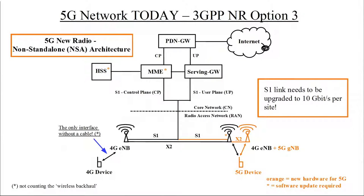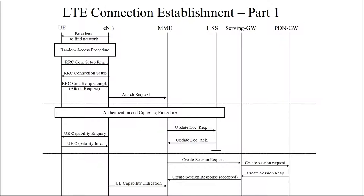We don't have standalone 5G networks — this was done because it was easier to implement. We also need better links from the core network to base stations. These days we usually have gigabit fiber connections, but in 5G we need bigger data rates. In theory with three sectors we need three times the data — about 10 gigabit links. State-of-the-art is 10 gigabits; you have to exchange the transceivers while the fiber stays the same.